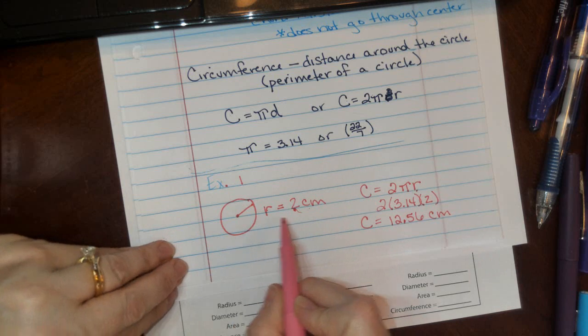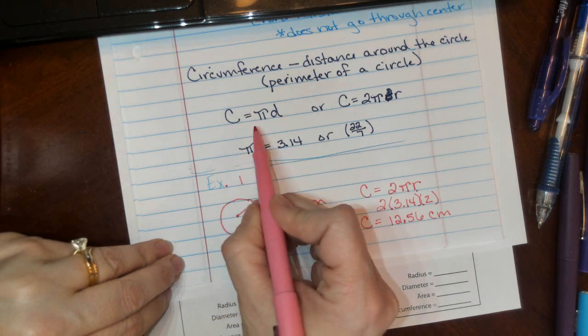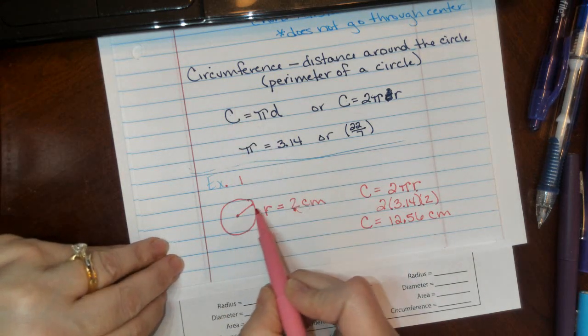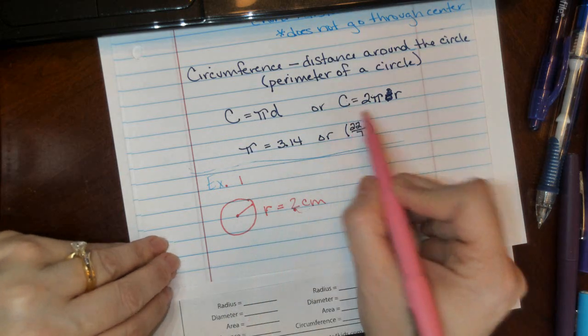If they give us diameter, we use this formula. If they give us radius, we use this formula. So let's do some practice problems.